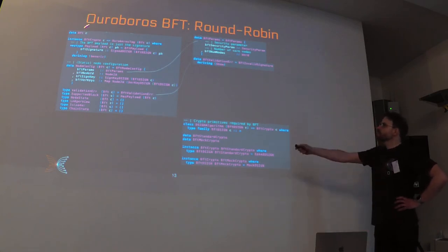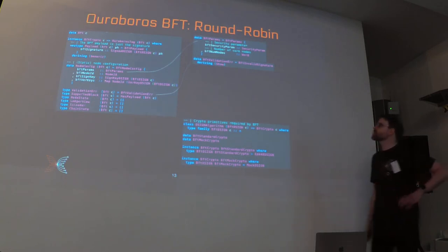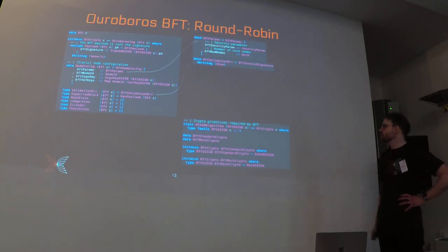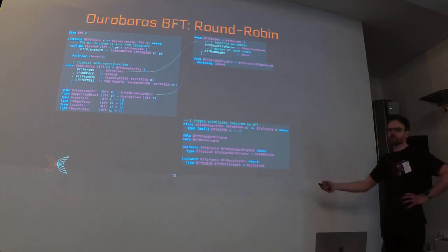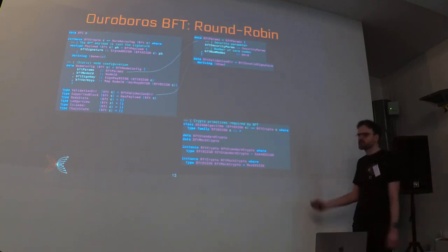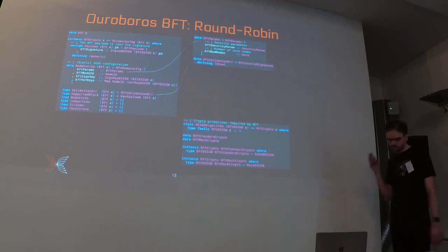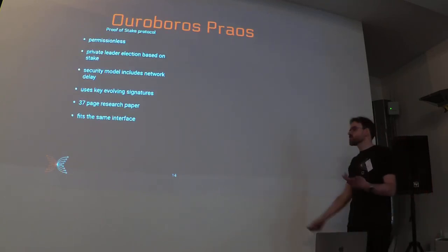Note there's a type parameter C for crypto, so signatures all depend on this parameter. We can use real elliptic curve cryptography for production, and use mock signatures for fast, readable tests.